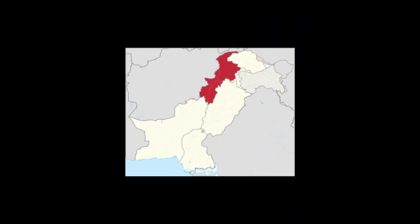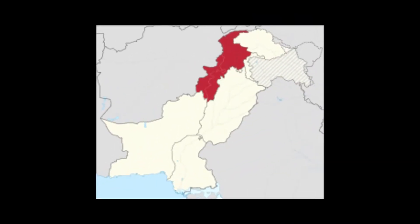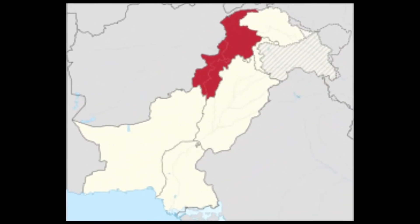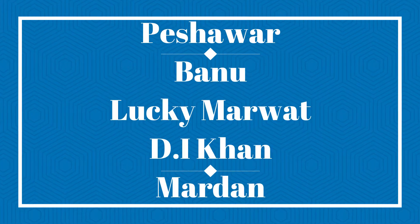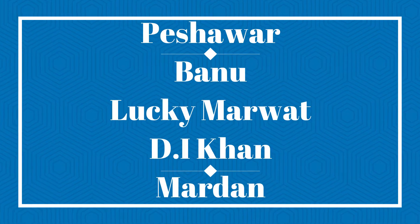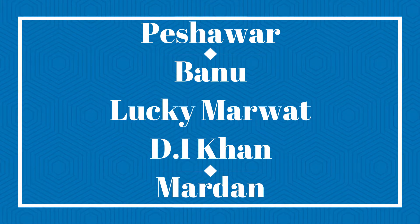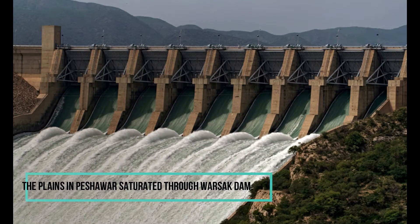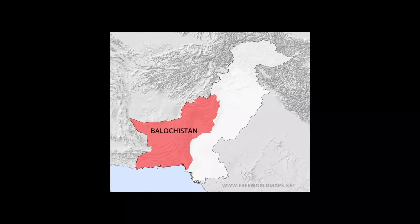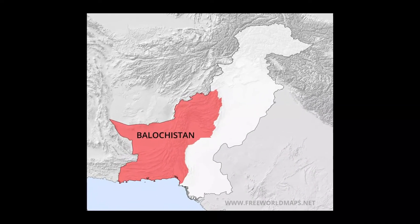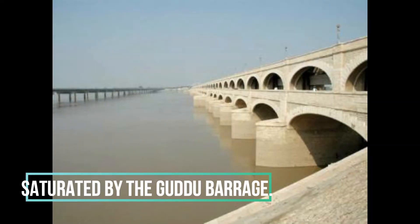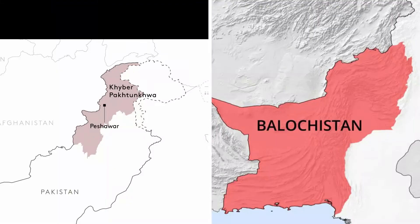The plain region of KPK mostly consists of cities like Peshawar, Bannu, Lakki Marwat, Dera Ismail Khan and Mardan. The plains in Peshawar are irrigated through the Warsak Dam. Balochistan is a dry region and is irrigated by the Guddu Barrage. As compared to KPK, this region receives less rainfall.